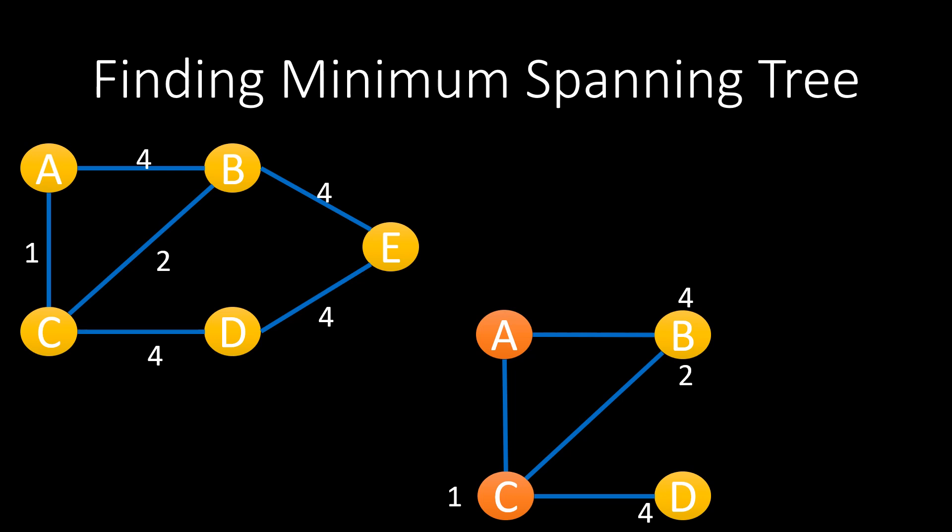Now B has two weights, 2 and 4. And as we are finding the Minimum Spanning Tree, we take the minimum of it and use 2. We then compare all the weights of the unvisited edges and select the minimum. So we use B and reach E.